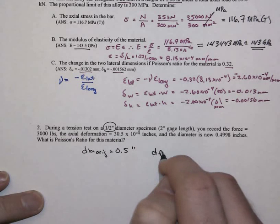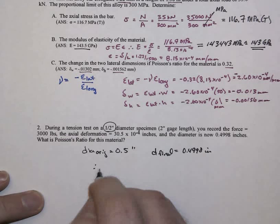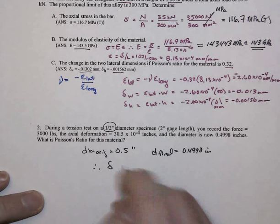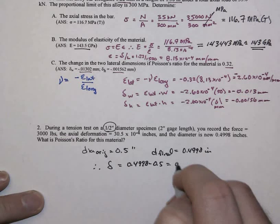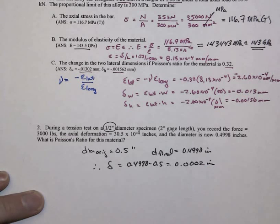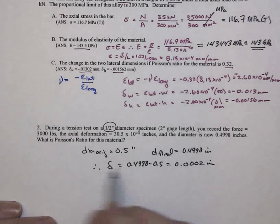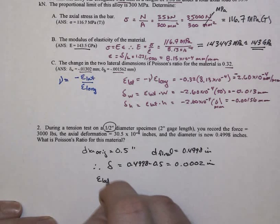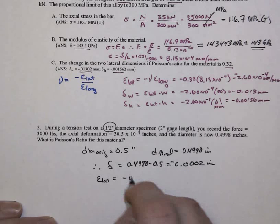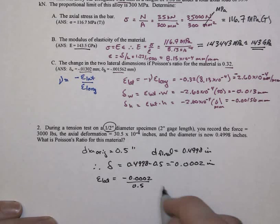Our diameter original equals 0.5 inches, our diameter final equals 0.4998 inches. And so our change in the diameter would be 0.4998 minus 0.5, equaling minus 0.0002 inches. And that's important here, right? That gives us something that's going on in the lateral direction.